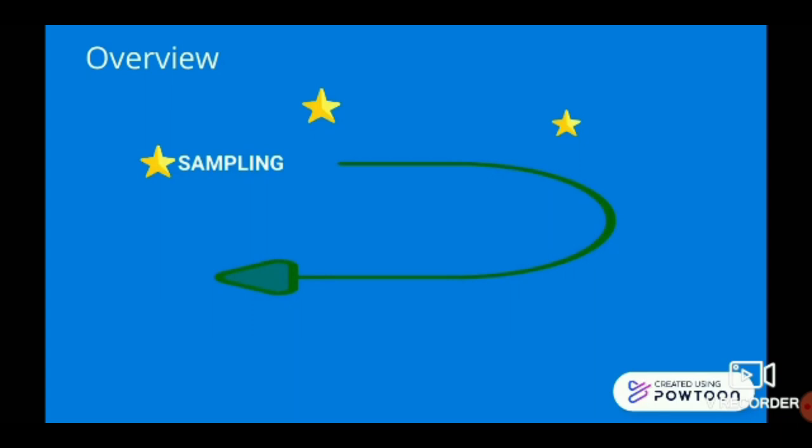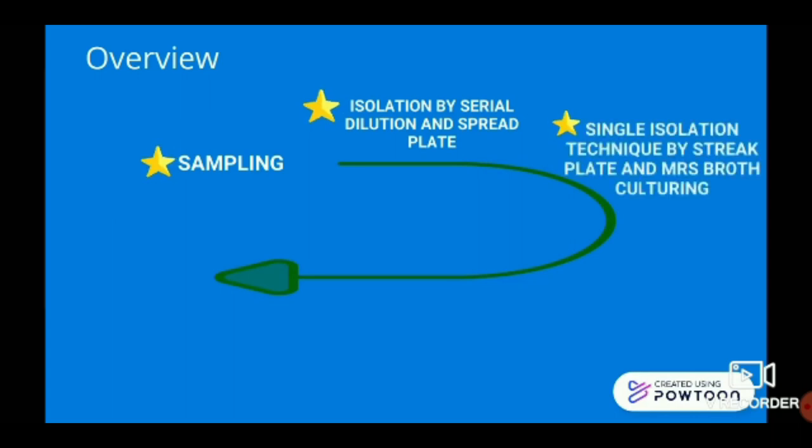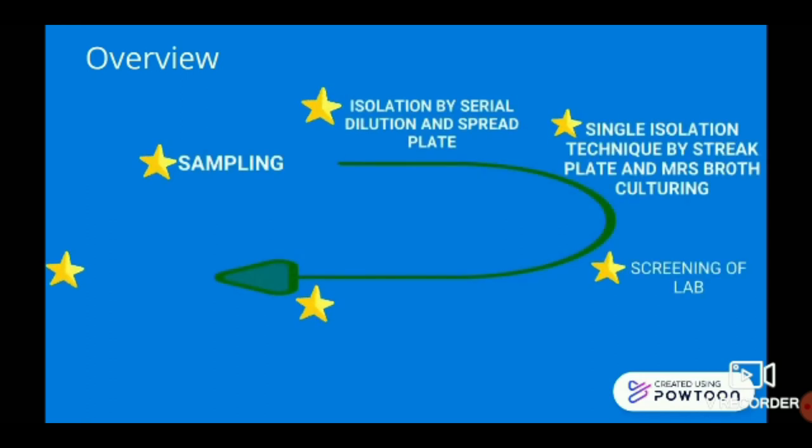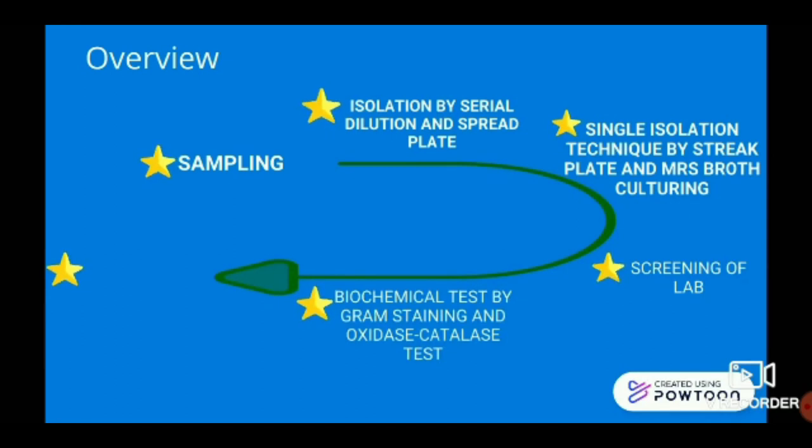With all the information, a thorough plan has been devised. It will start with sampling followed by serial dilution and spread plate. The sample then undergoes single isolation technique by streak plate and MRS broth culturing. Afterwards, they will undergo lab screening before biochemical tests such as Gram Staining and Oxidase Catalase test. Based on the results, selected strain will be used in antimicrobial tests.